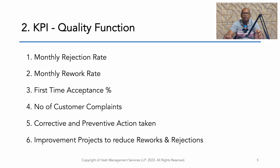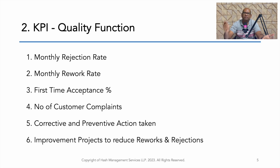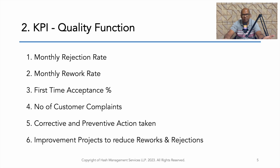Moving to the quality department: the typical KPIs are monthly rejection rate, monthly rework rate, and first time acceptance rate — how many pieces or how much of production we are accepting the first time. Number of customer complaints from the field is also a good KPI. Corrective and preventive actions initiated by the quality department can be a good KPI, as well as improvement projects implemented to reduce rejections and rework.